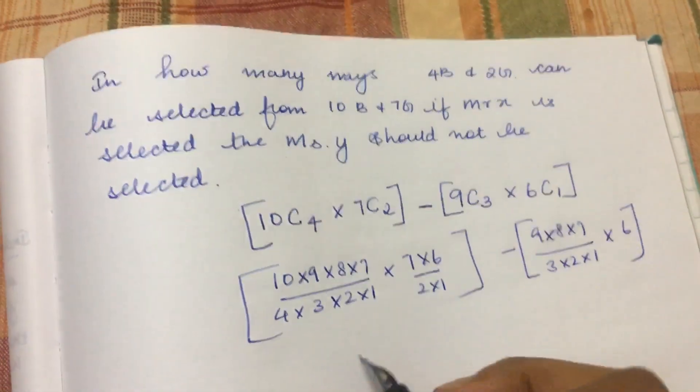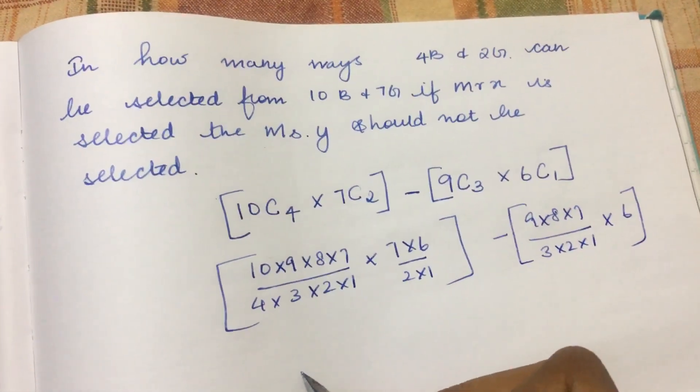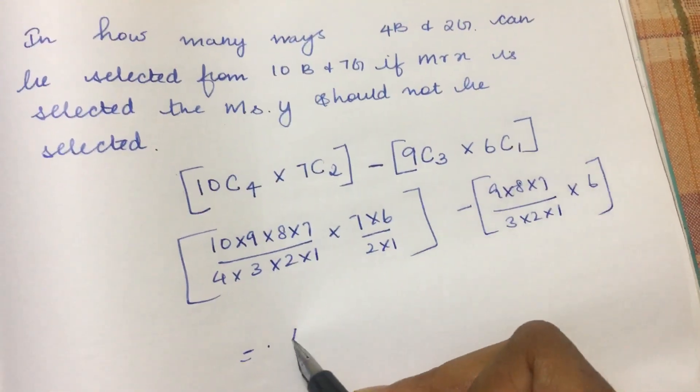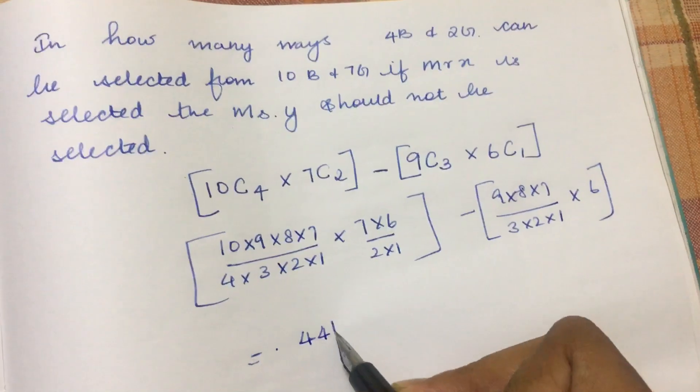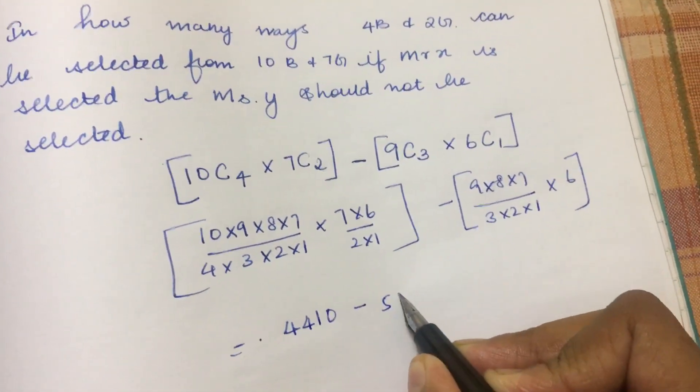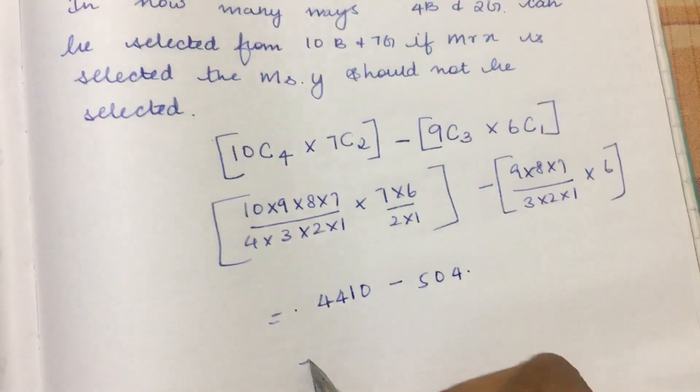After canceling all the terms, the total comes to 4410 minus. So the total answer will be...